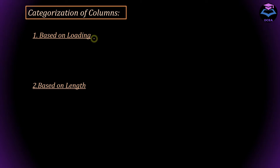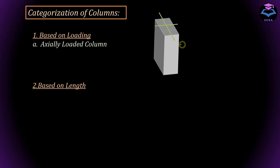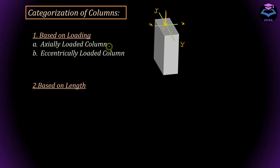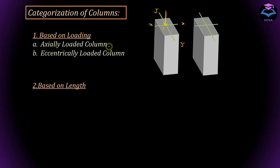On the basis of loading, columns can be classified as: number one, axially loaded columns — those columns where the load passes through the center of the cross section. The second is eccentrically loaded columns — those columns where the load is acting at a certain distance e from the center. This distance e can be along the x-axis or y-axis.